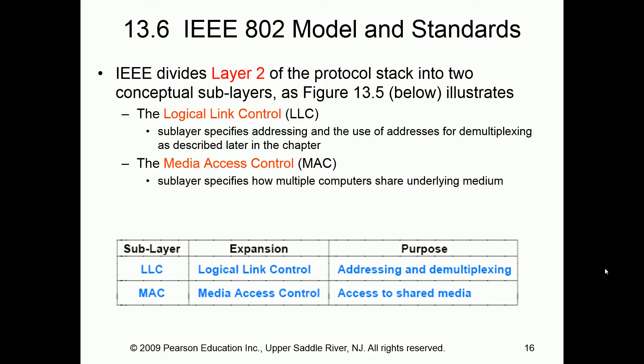Layer 2 is our data link layer — this is where our frames are. It's actually one of the only layers that gives us two sub-layers: our LLC, or Logical Link Control, and our MAC, or Media Access Control. Our LLC deals with multiplexing and addressing. Our MAC controls access to shared media — it specifies how multiple computers share the underlying media, whether guided or unguided.